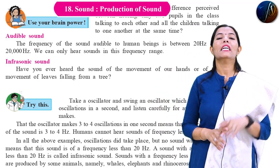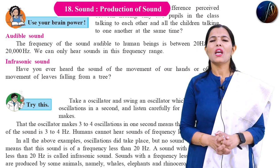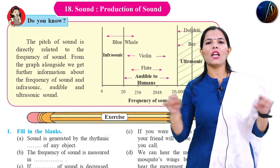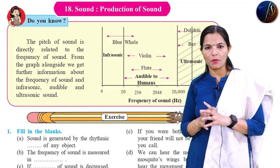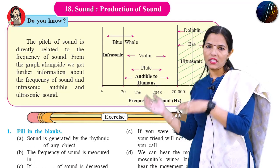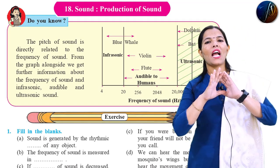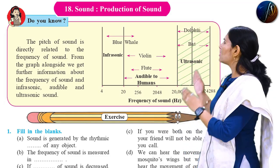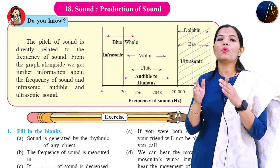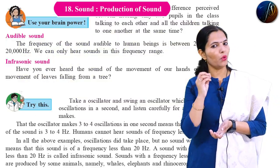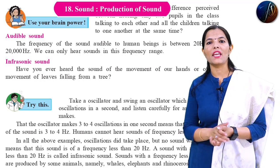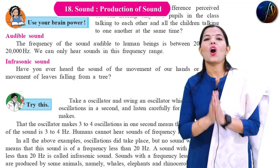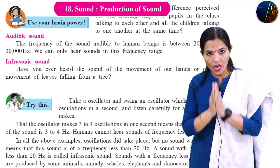The types of sound we will cover are: audible sound, infrasonic sound, and ultrasonic sound. You will be given a chart with a frequency scale where you have to explain what is audible, what is infrasonic, and what is ultrasonic. First, infrasonic sound means the sound which has a frequency less than 20 Hz. A sound of frequency less than 20 Hz is called infrasonic sound.